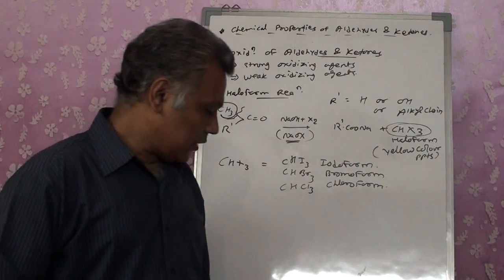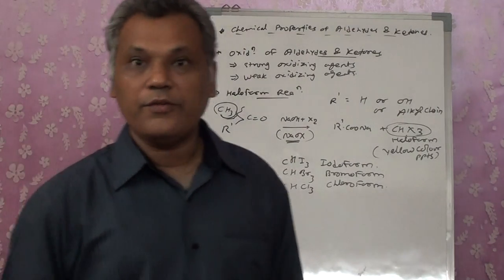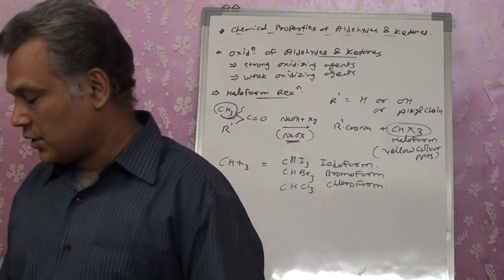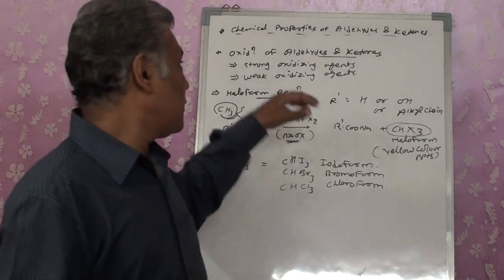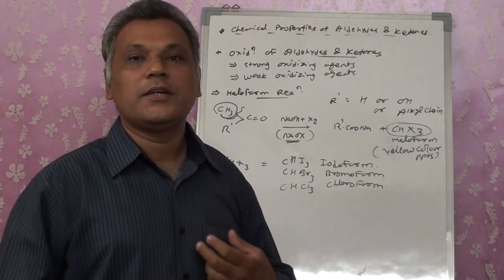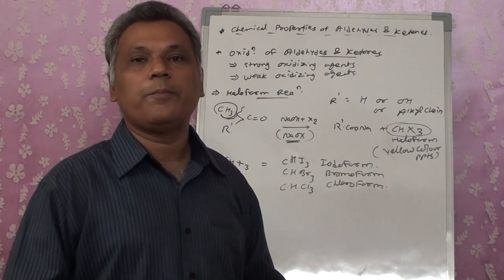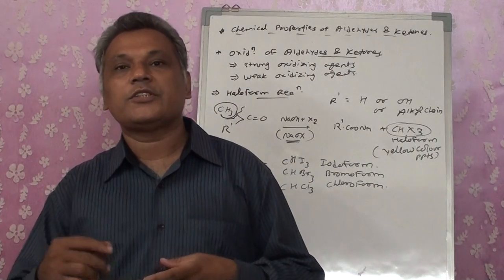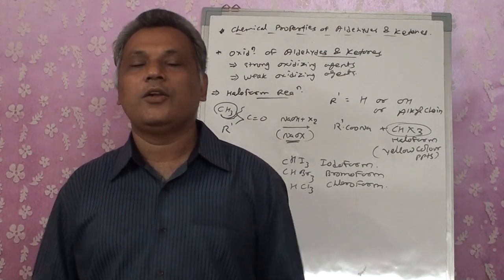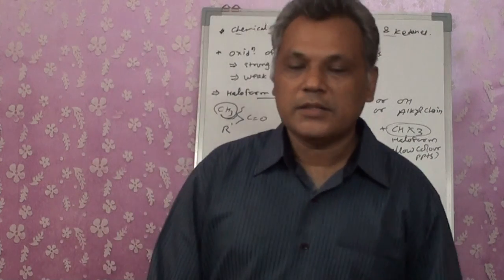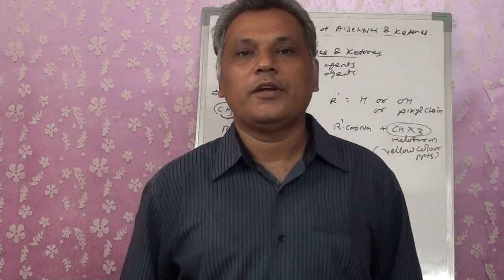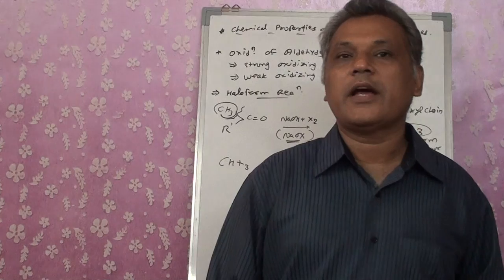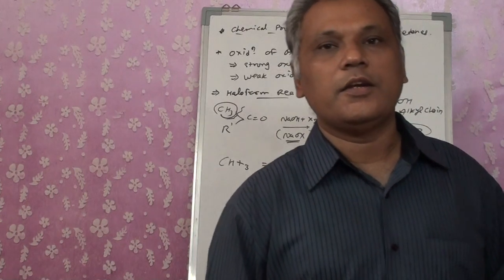These are all the oxidation reactions for aldehydes and ketones. Today we studied two types of reactions — reduction and oxidation. Under reduction: simple reduction, Wolf-Kishner, and Clemmensen. Under oxidation: Tollens, Fehling's, and haloform reactions. Make it a practice to recall and write all these reactions in your notebook. We will study the other chemical reactions of aldehydes and ketones in our next lecture. Thank you.